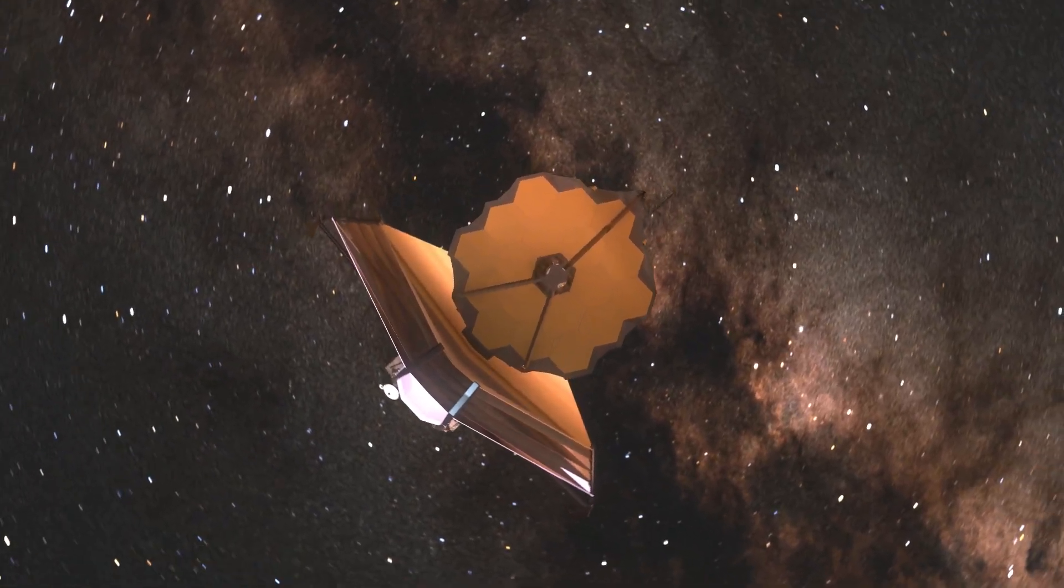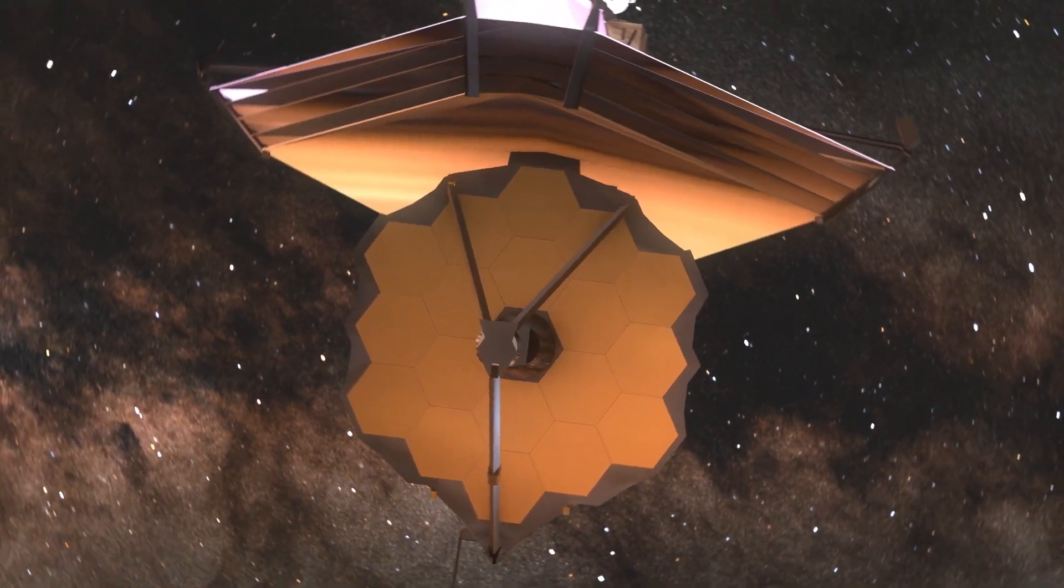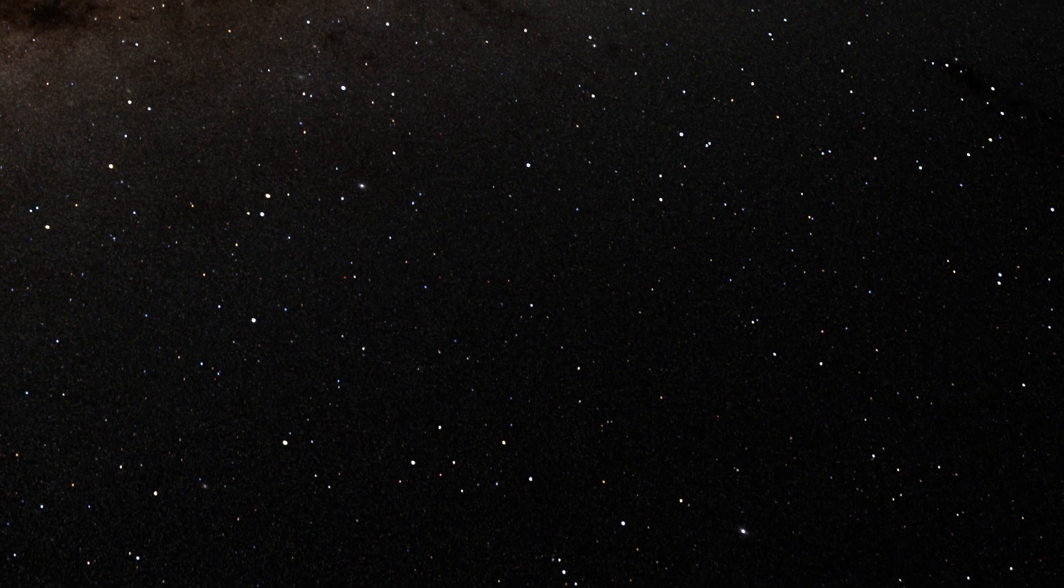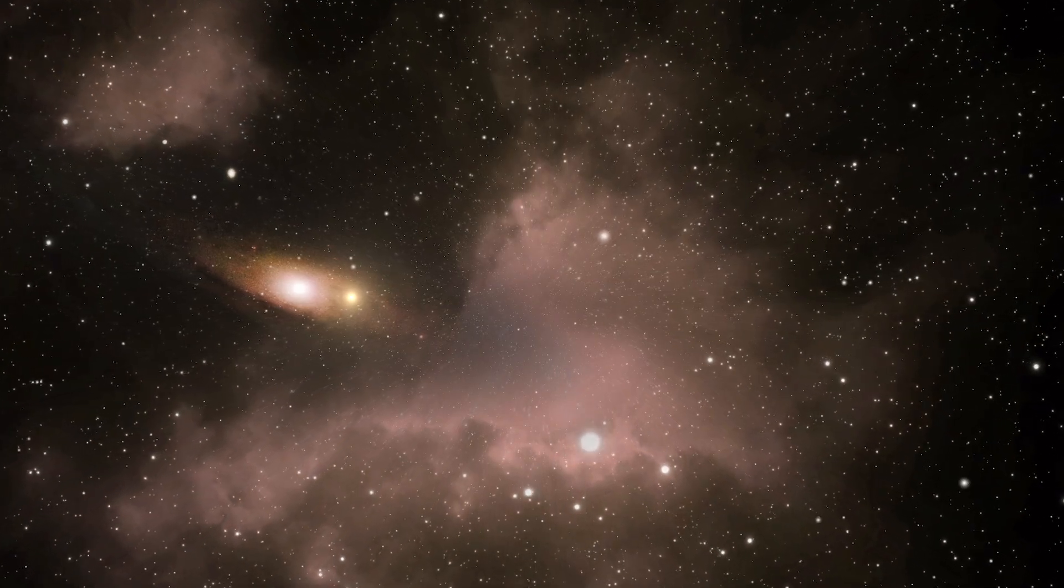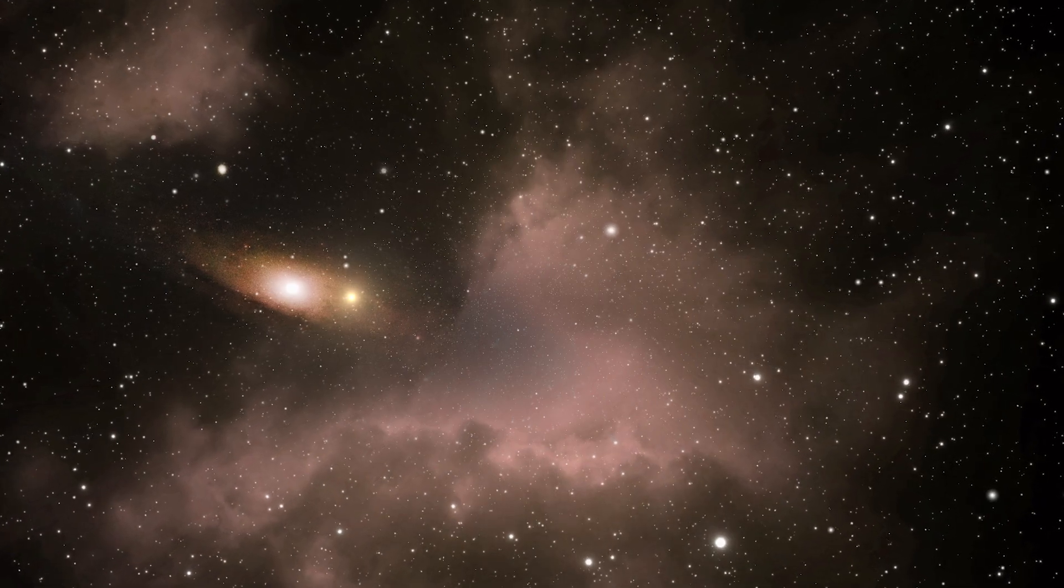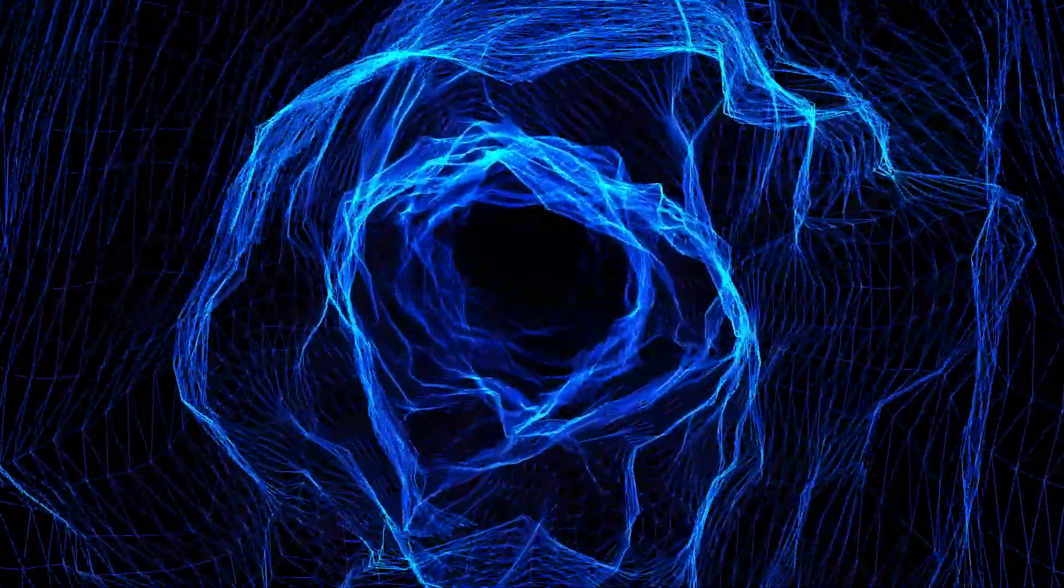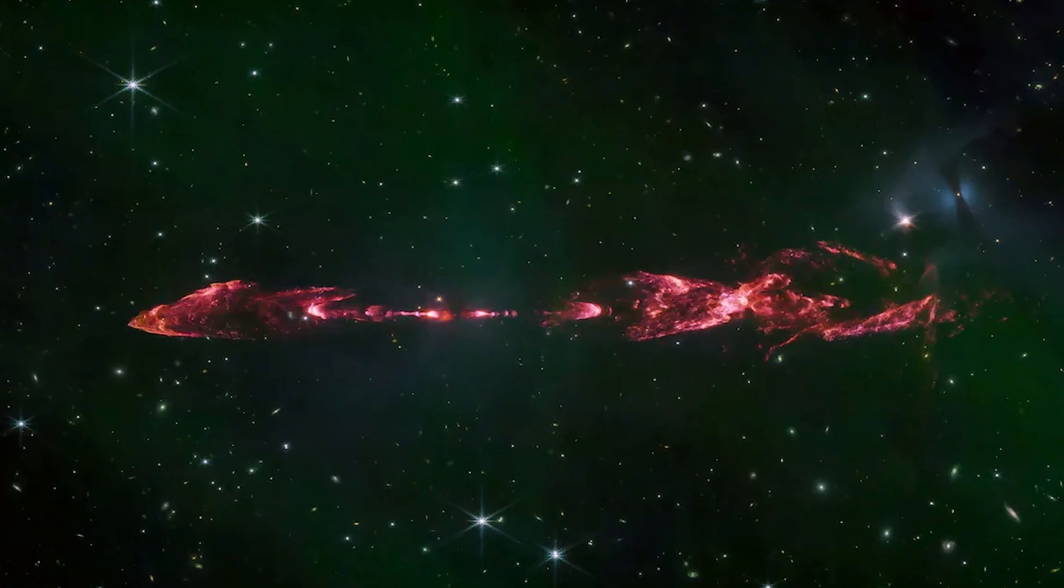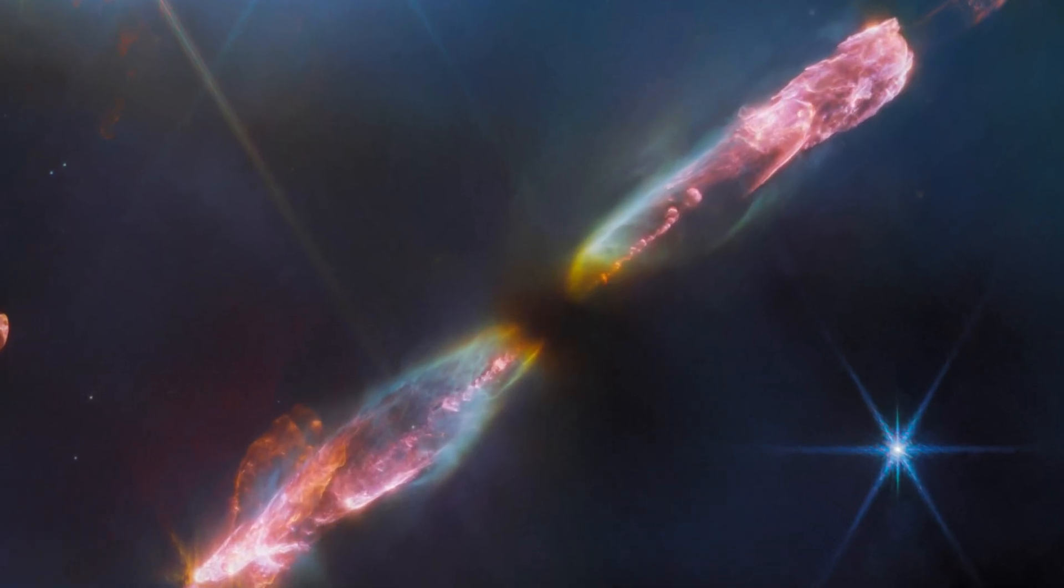James Webb Space Telescope aims to explore the universe's infancy, capturing light from the first galaxies that formed shortly after the Big Bang. These observations are crucial for understanding how galaxies, stars and planetary systems evolved from the primordial cosmos to the complex structures we see today. By peering back more than 13.5 billion years, the telescope seeks to witness the moments when the first stars ignited, breaking the cosmic dark ages and leading to the epoch of reionization.